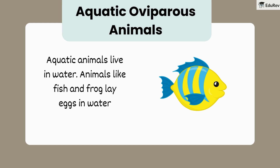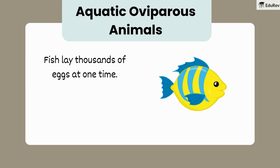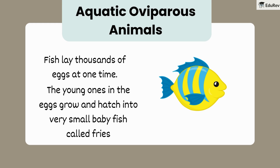Now let's dive into aquatic oviparous animals. These are animals that live in water, like fish and frogs, and they lay their eggs in water too. Did you know that fish lay thousands of eggs at one time? When these eggs hatch, very small baby fish come out — these tiny fish are called fry.